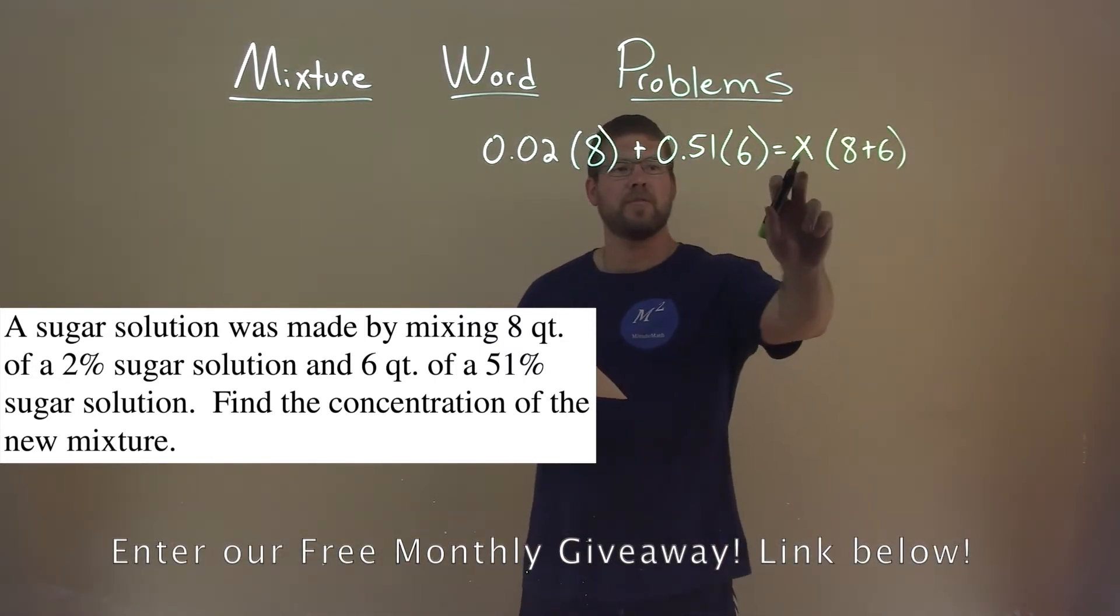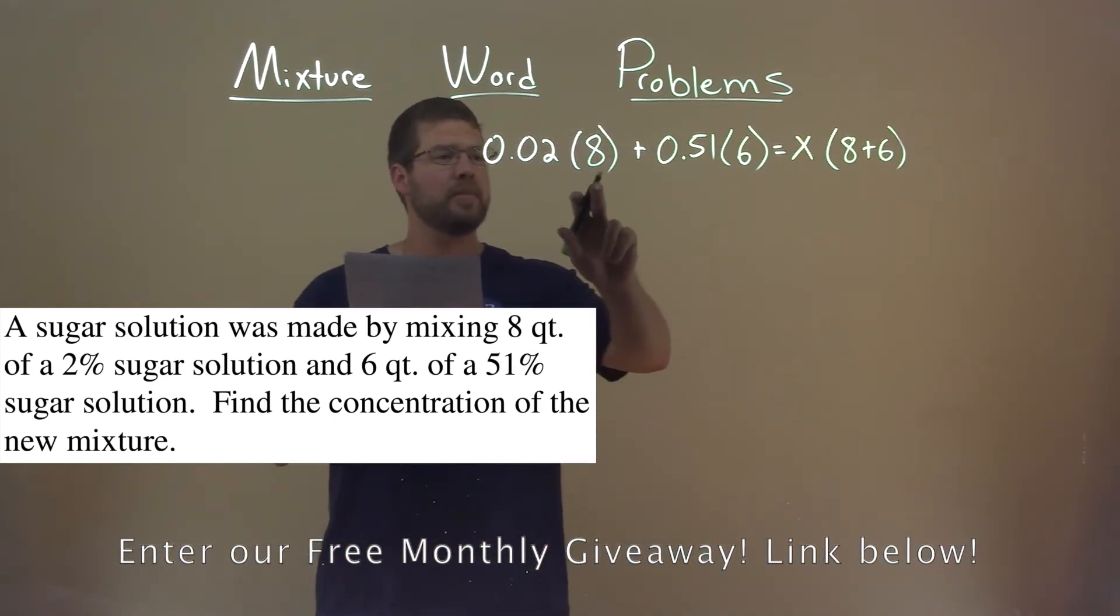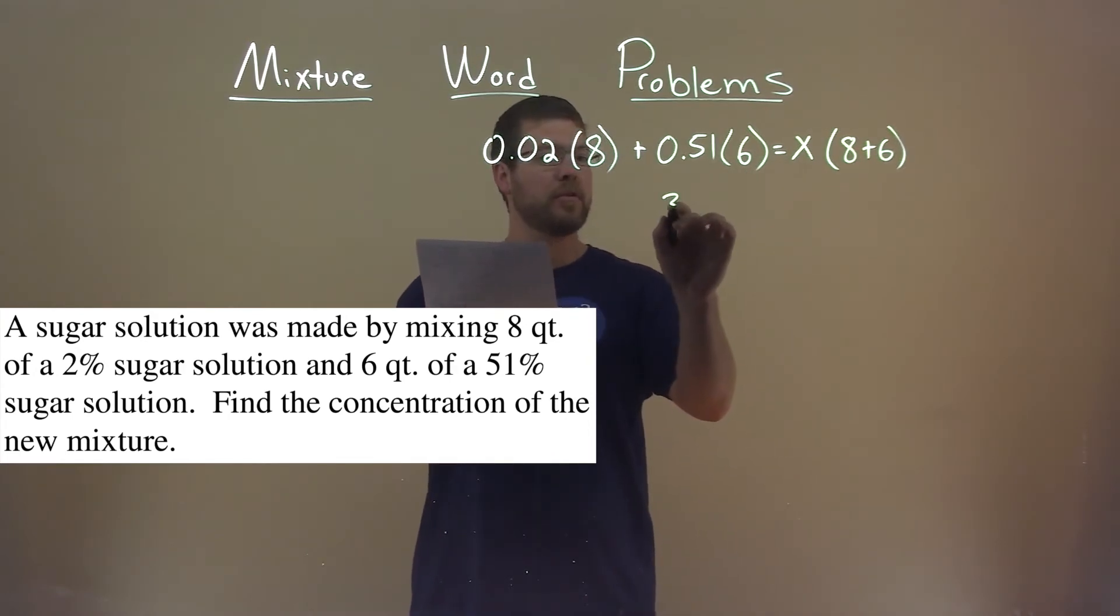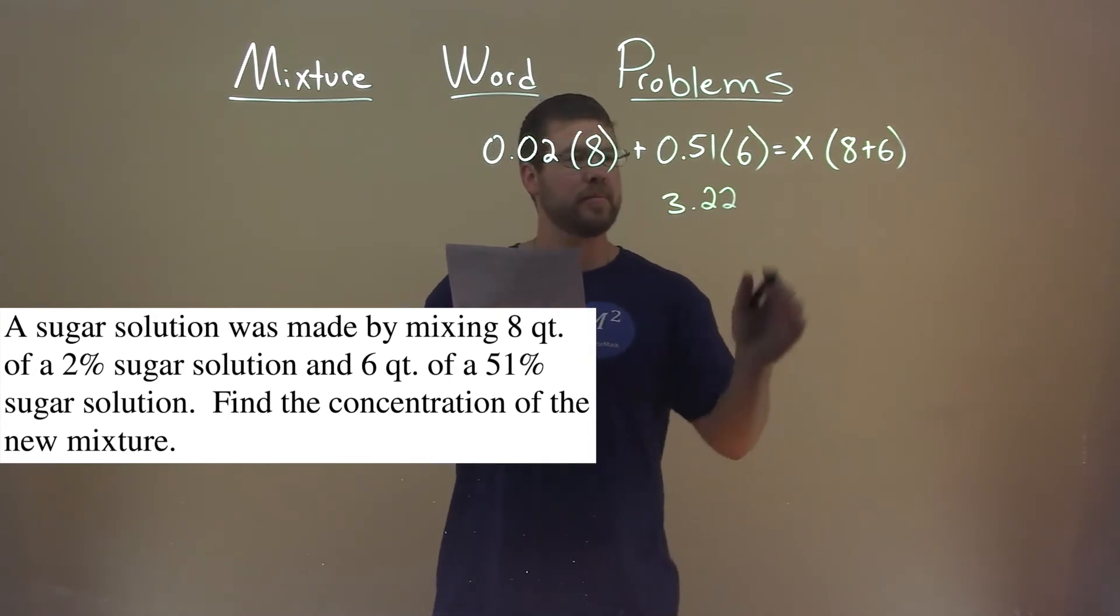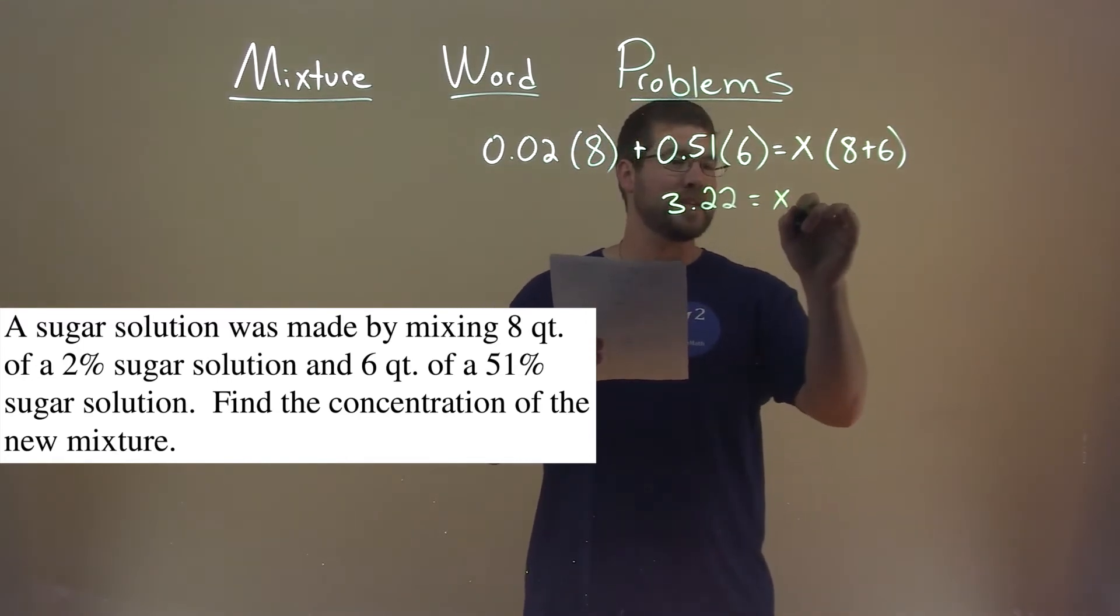And so now we want to find that x value here. Well, 0.02 times 8 plus 0.51 times 6 comes out to be 3.22, and that's equal to x times 8 plus 6, which is 14.